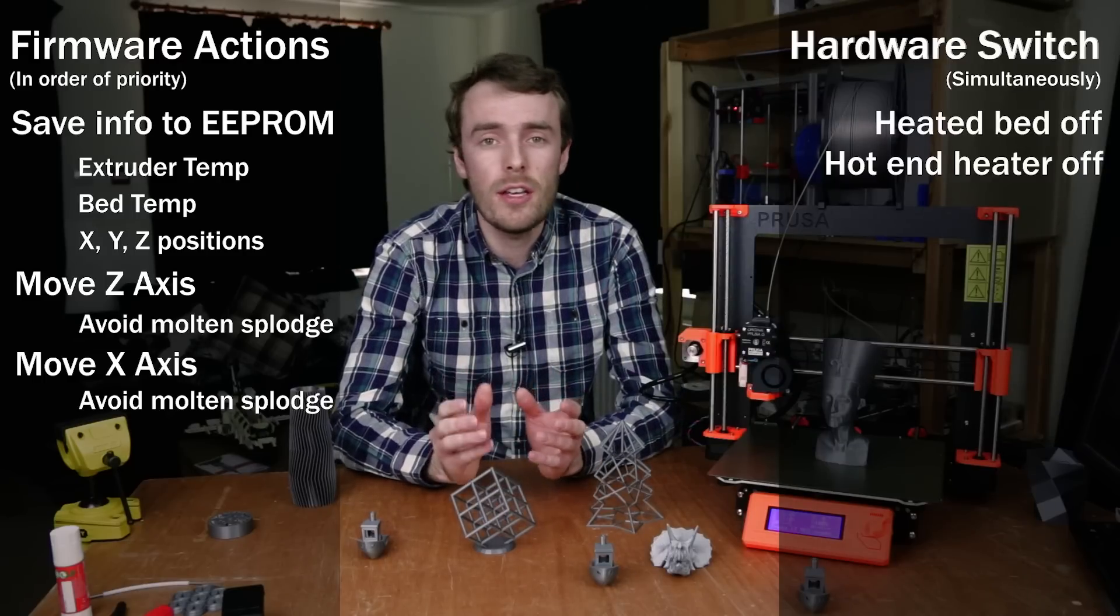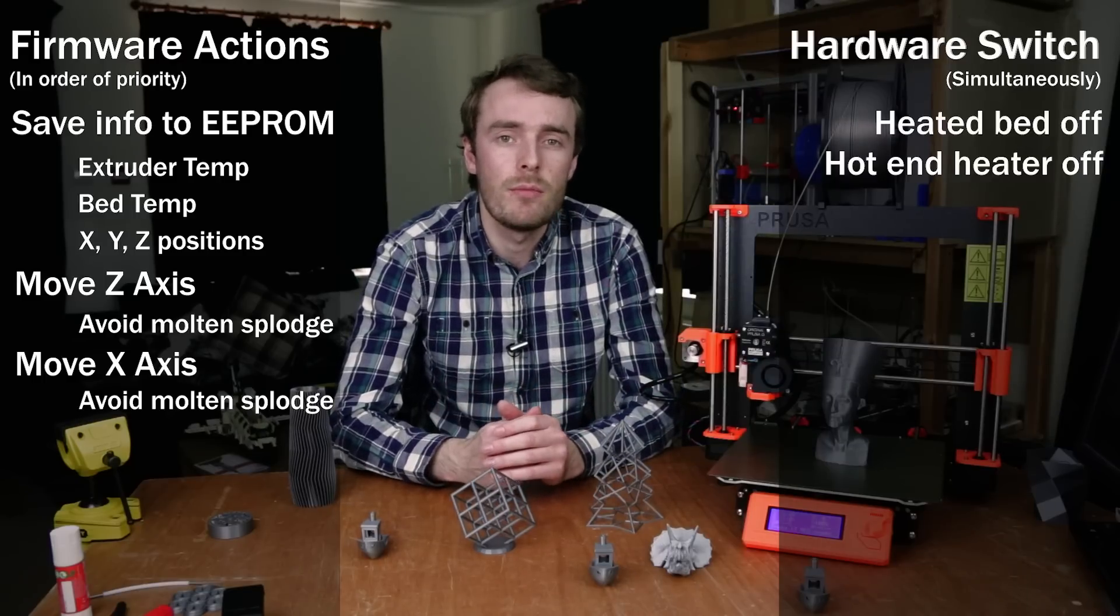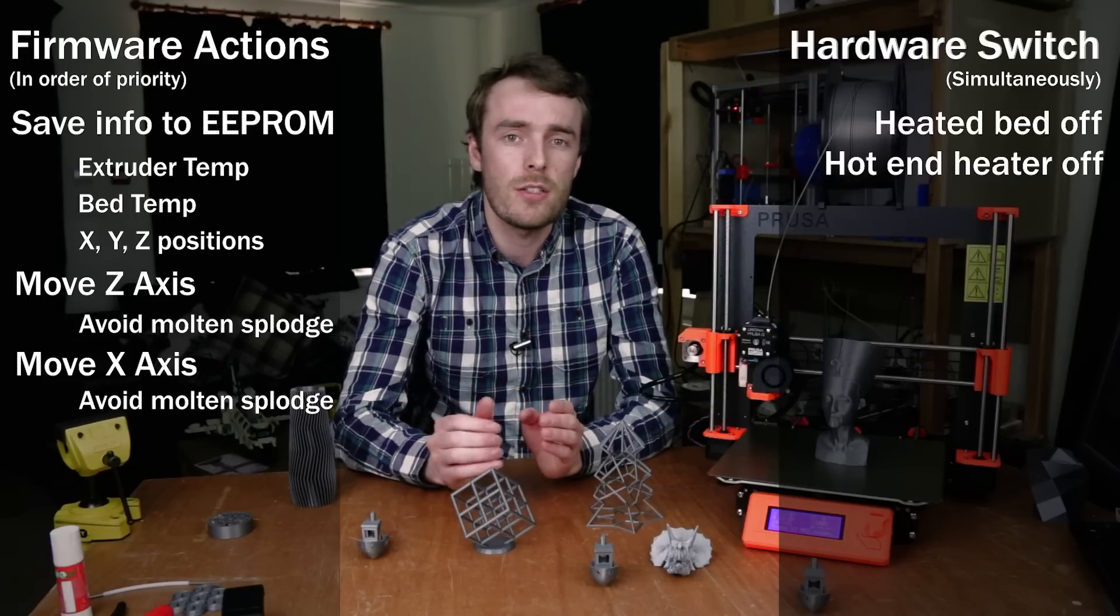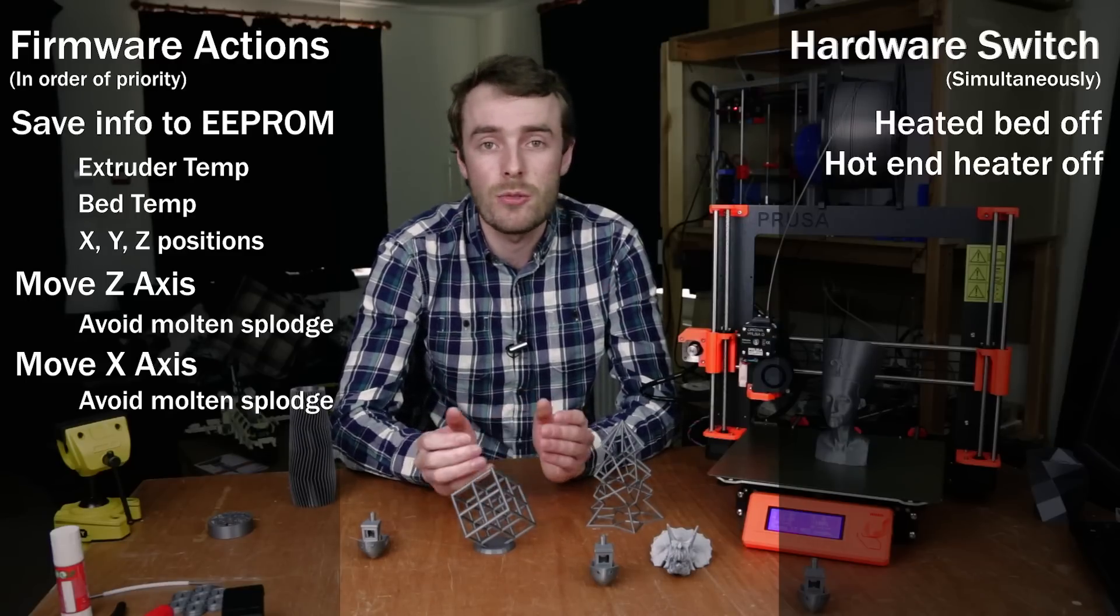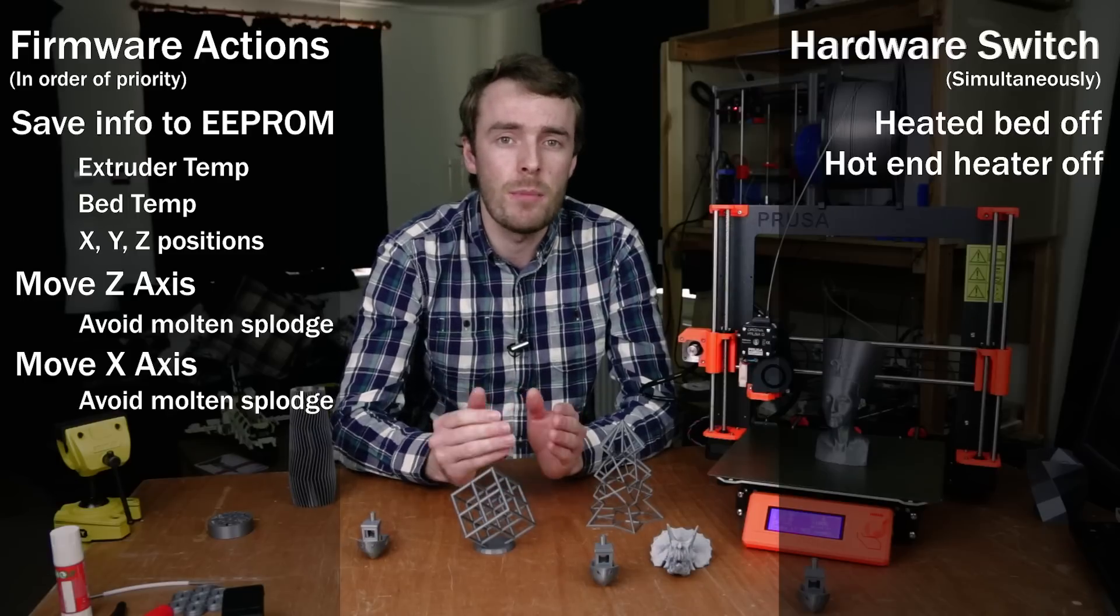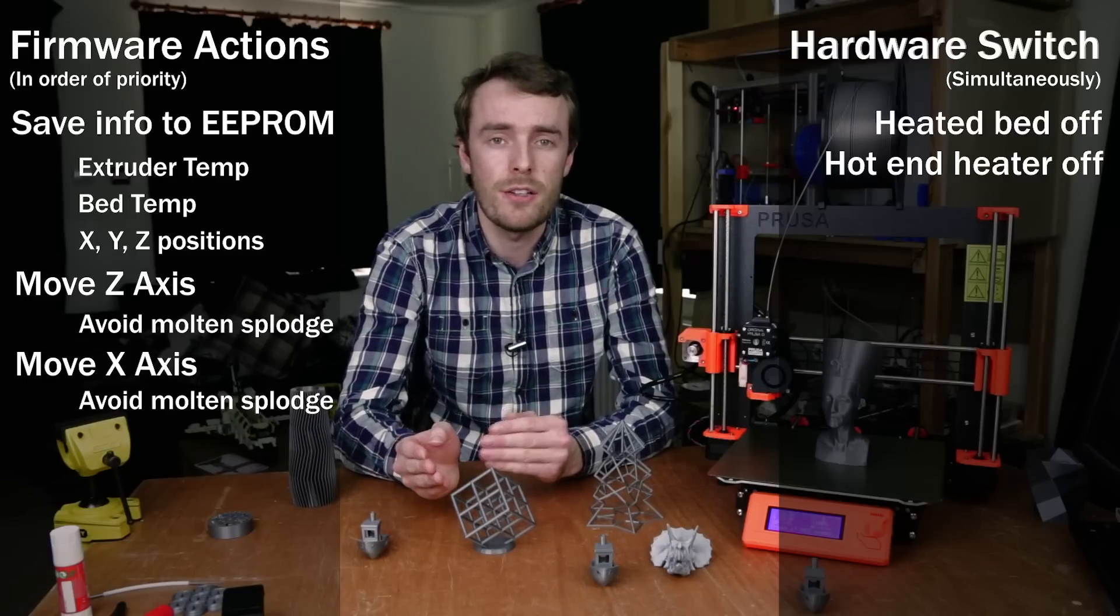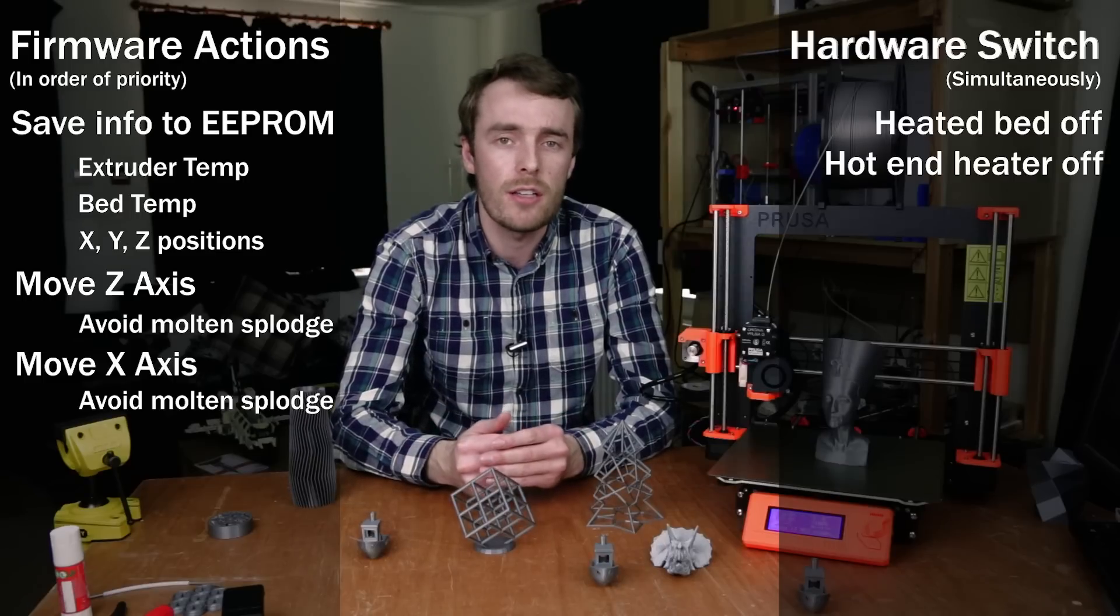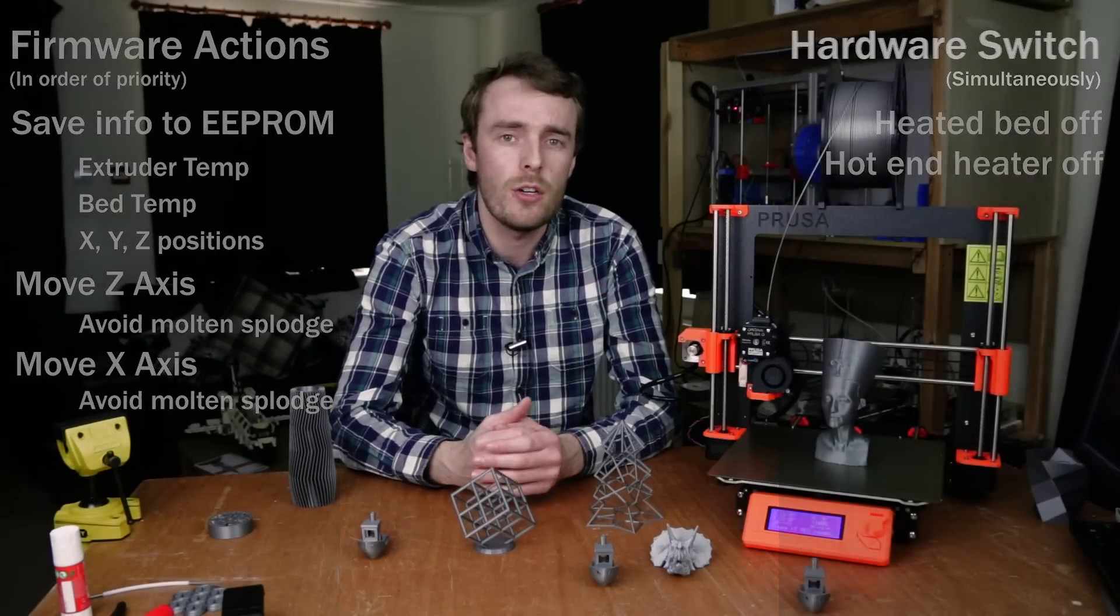Remember, there is no battery in this printer. The only available energy it has once the power has been turned off is that stored in the capacitors on the power supply. As a result, the more energy you can save by not powering things like the heated bed and the hot end, the more you have available to do the other important things like saving the data and moving the hot end.